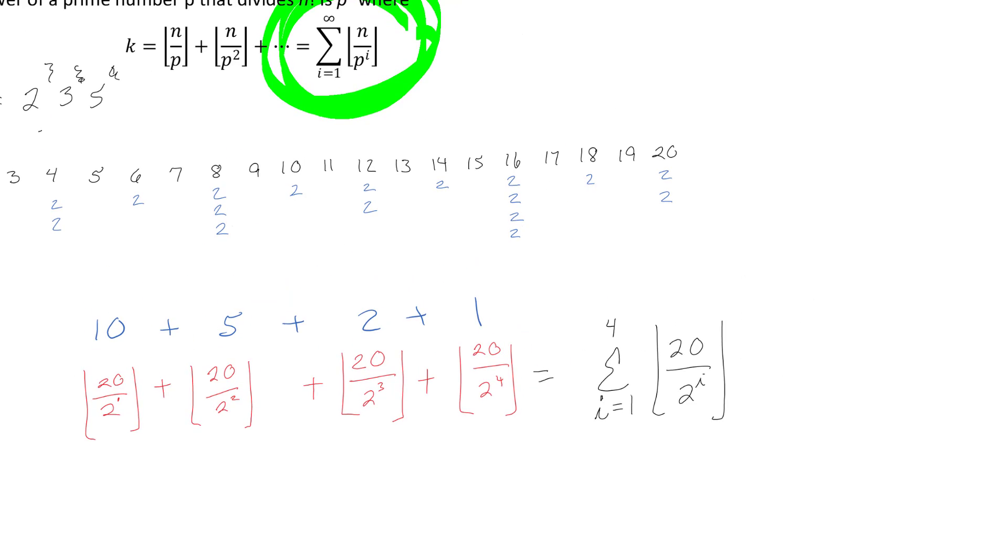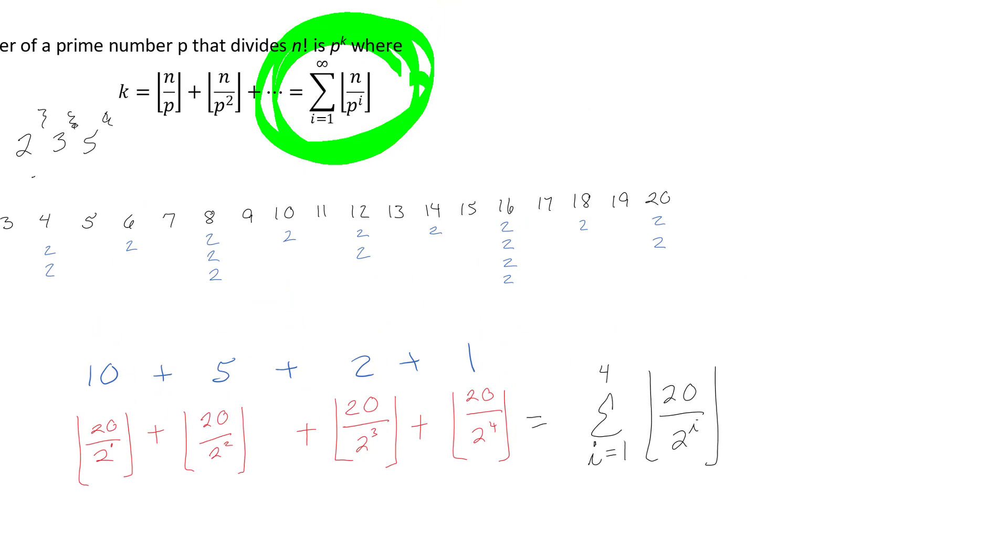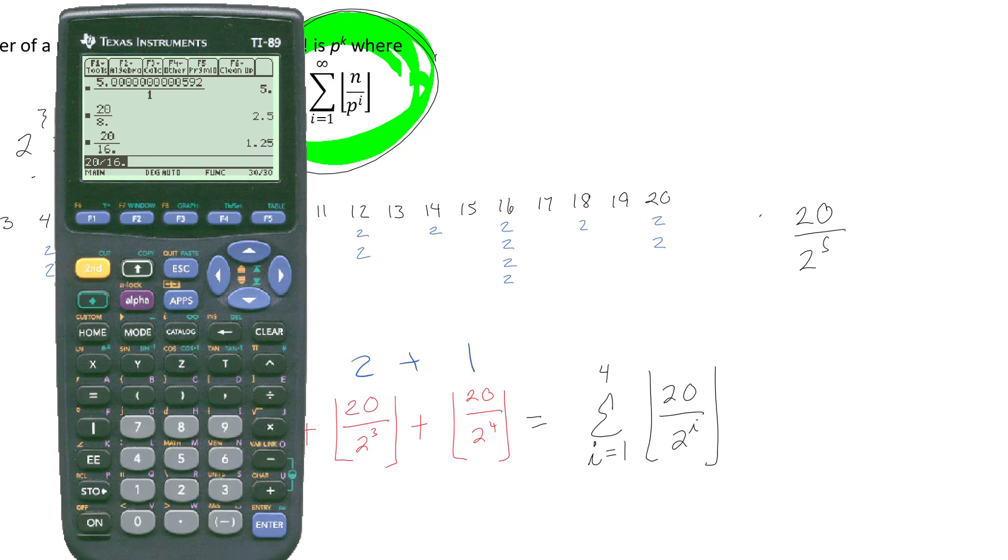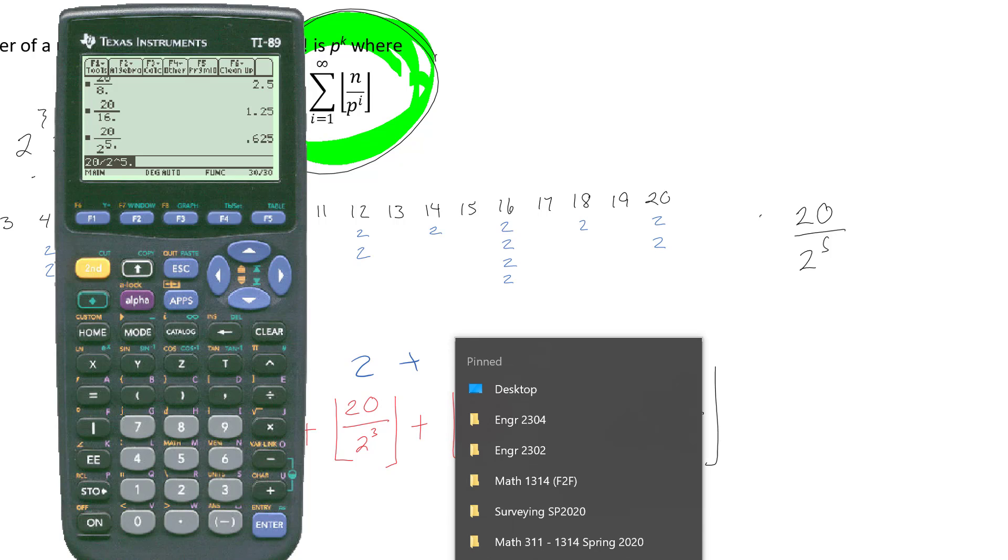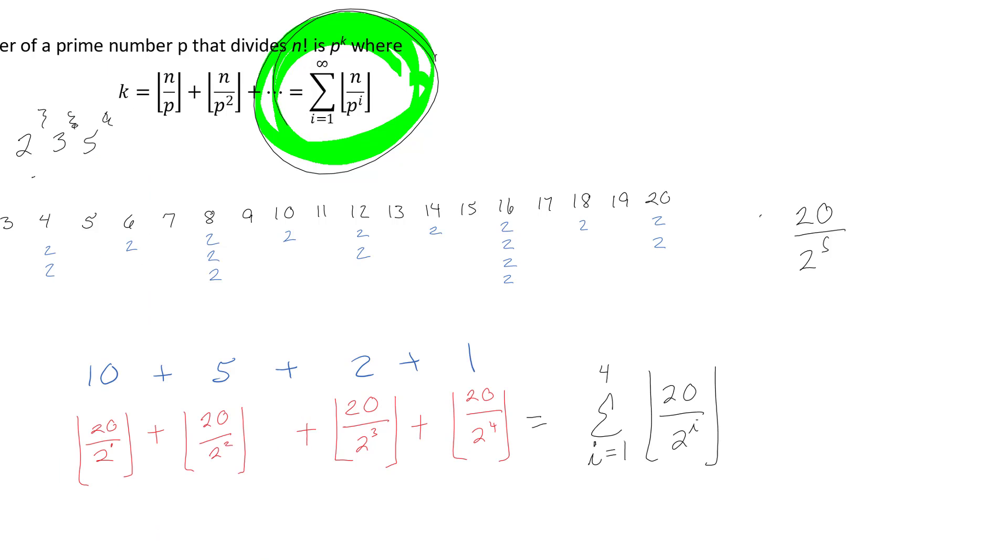That's the same thing that we have here except this is just accounting for the fact that it doesn't know how high up. You could also divide 20 by 2 to the 5th, but you're going to get 0.625 and the floor of a fraction less than 1 is just 0. So the official definition goes up to infinity because once you get above the value of 20 then it's just done.